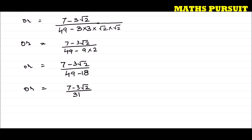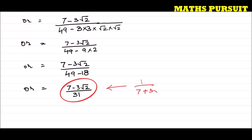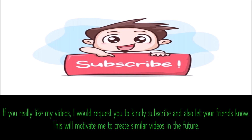So guys, this is our answer. When we rationalized the denominator of the given expression 1 upon 7 plus 3 root 2, we got 7 minus 3 root 2 upon 31. Hope guys you understood this. If you still have any questions or doubts, please reach out to me in the comment section and I will get back to you. If you really like my videos, please subscribe and let your friends know — this will motivate me to create similar videos in the future. Thank you, bye.